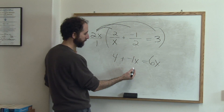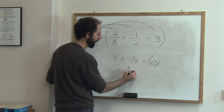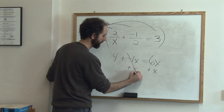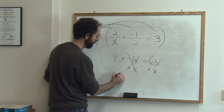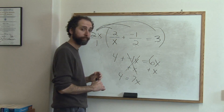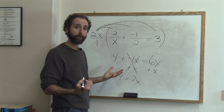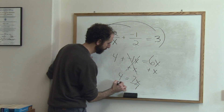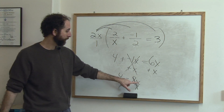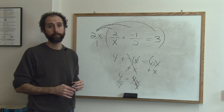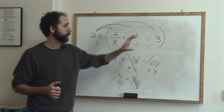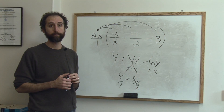Now we want to get x alone, combine like terms — we're going to add x to both sides. That cancels, giving us 4 equals 6x plus x, which is 7x. I want to get x alone, so divide both sides by 7. x equals 4 sevenths — that's the solution to this rational equation.